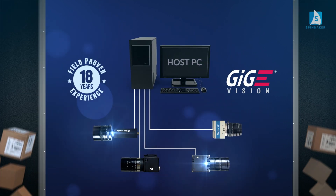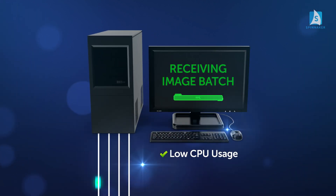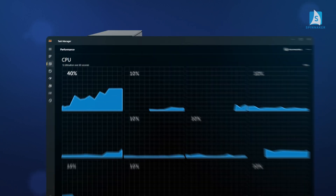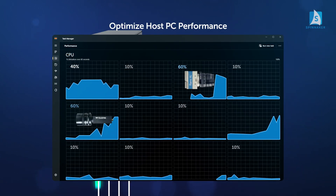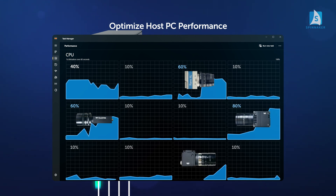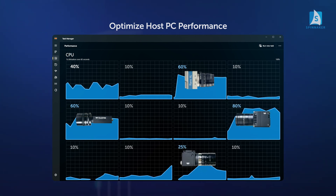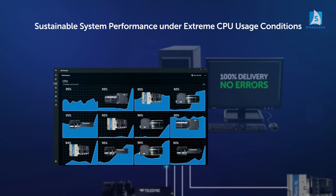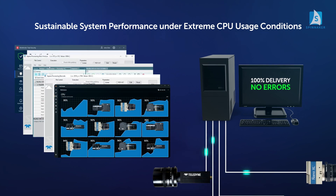Teledyne's GigE Driver framework draws from decades of experience, achieving low CPU usage and high reliability. The Configuration Utility allows assignment of a dedicated CPU core to each network interface card port, optimizing overall host performance and processing speed. Experience sustainable system performance even under extreme CPU usage, with multiple cameras and background applications running simultaneously.